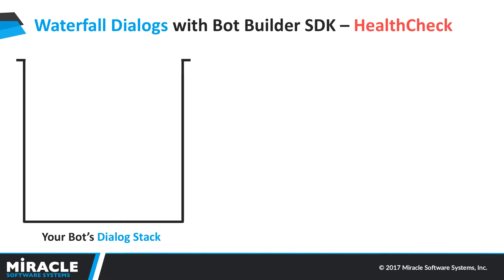We want users to be able to conduct health checks on their systems where they ask for a system and an environment, and the bot determines whether it's running or not reachable using a ping command. With this automation, your user would be able to query any number of systems from a database. We'll look into that architecture in a minute.